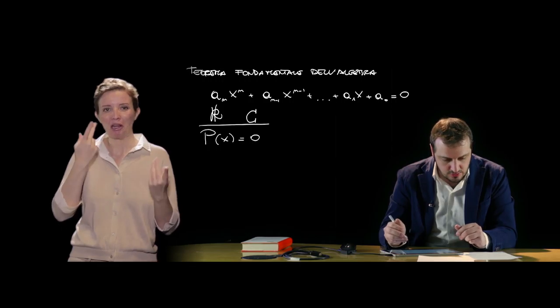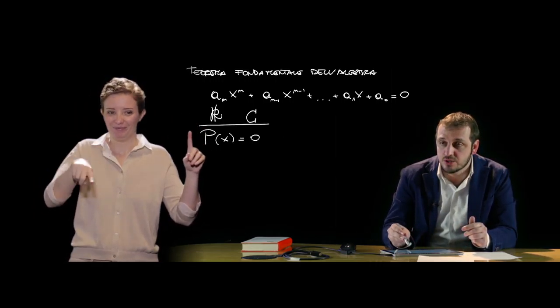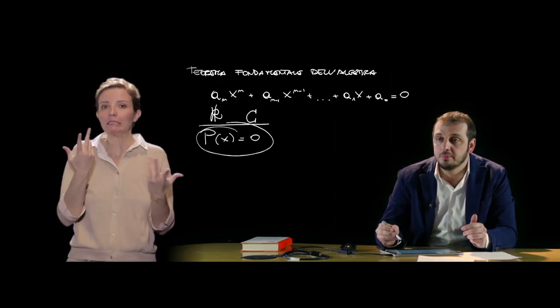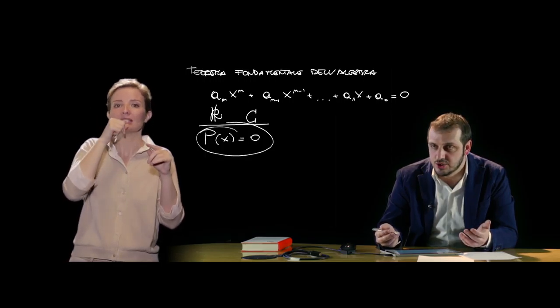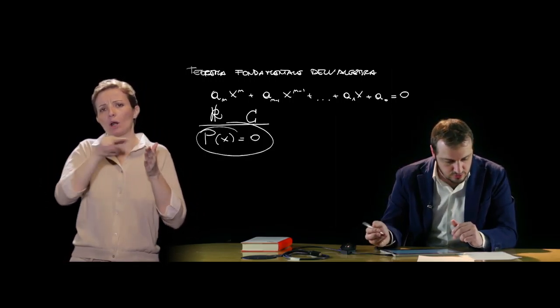Detto questo, possiamo analizzare alcune tecniche per risolvere le equazioni di grado superiore al secondo. In particolare, se un'equazione è scritta nella forma p(x) = 0, possiamo cercare di scomporre il polinomio in prodotti di polinomi di primo o secondo grado, che possiamo risolvere agevolmente con le tecniche già viste, applicando poi le leggi dell'annullamento del prodotto.